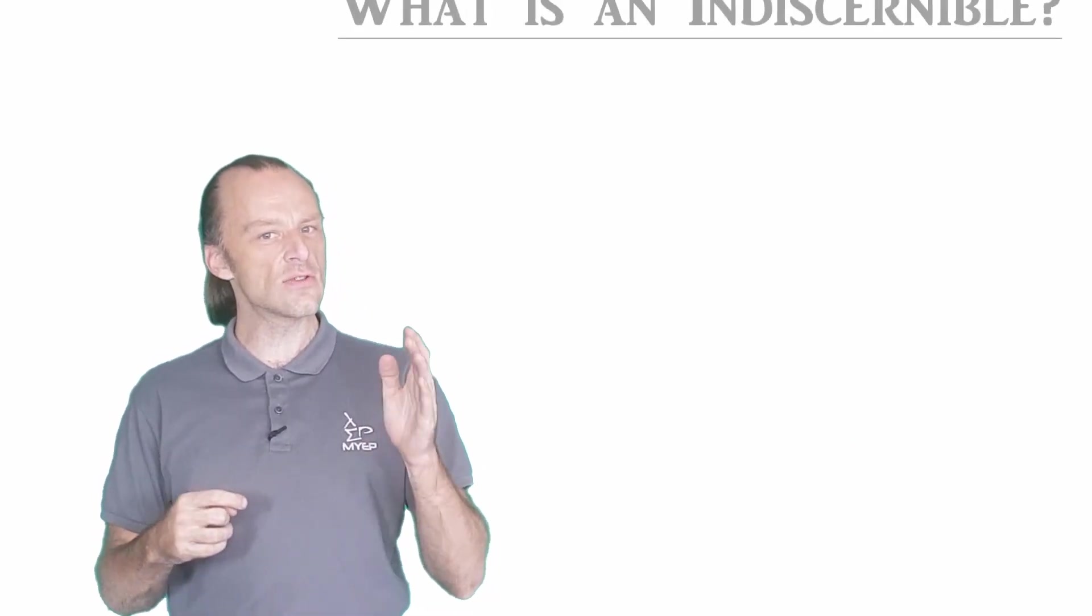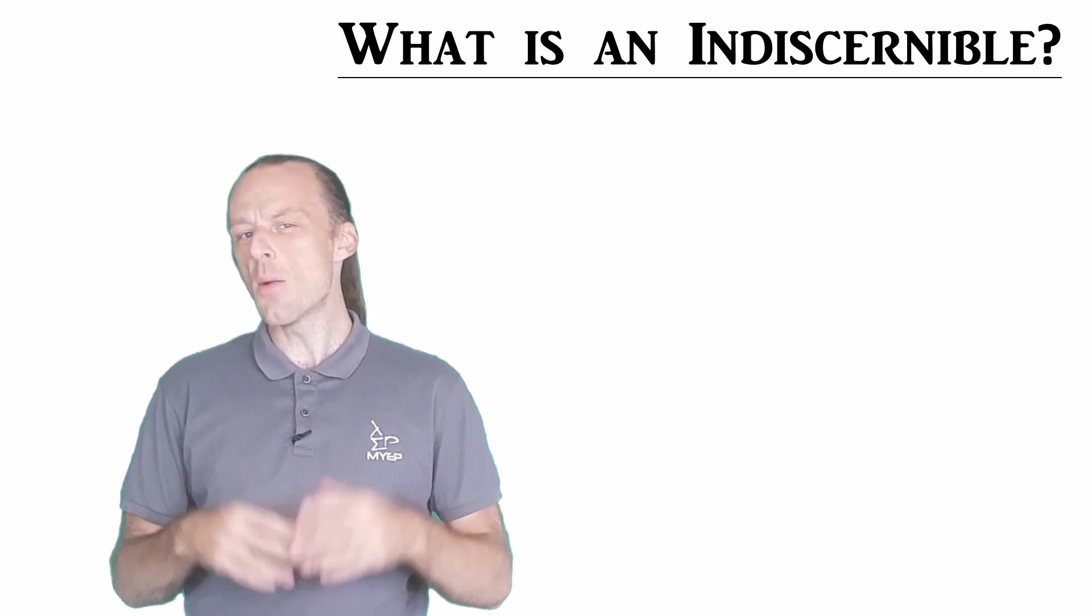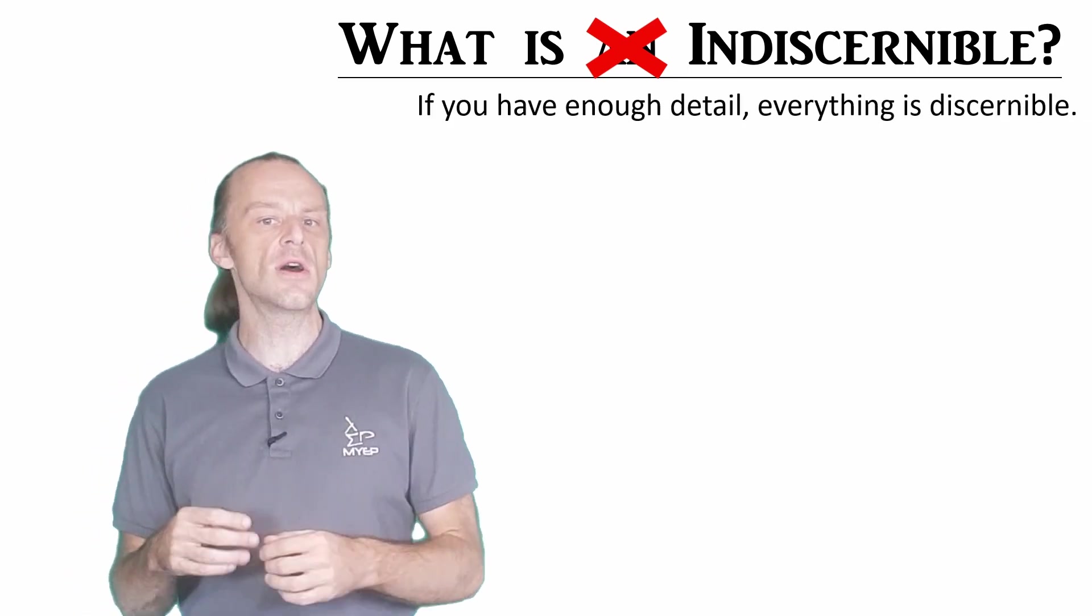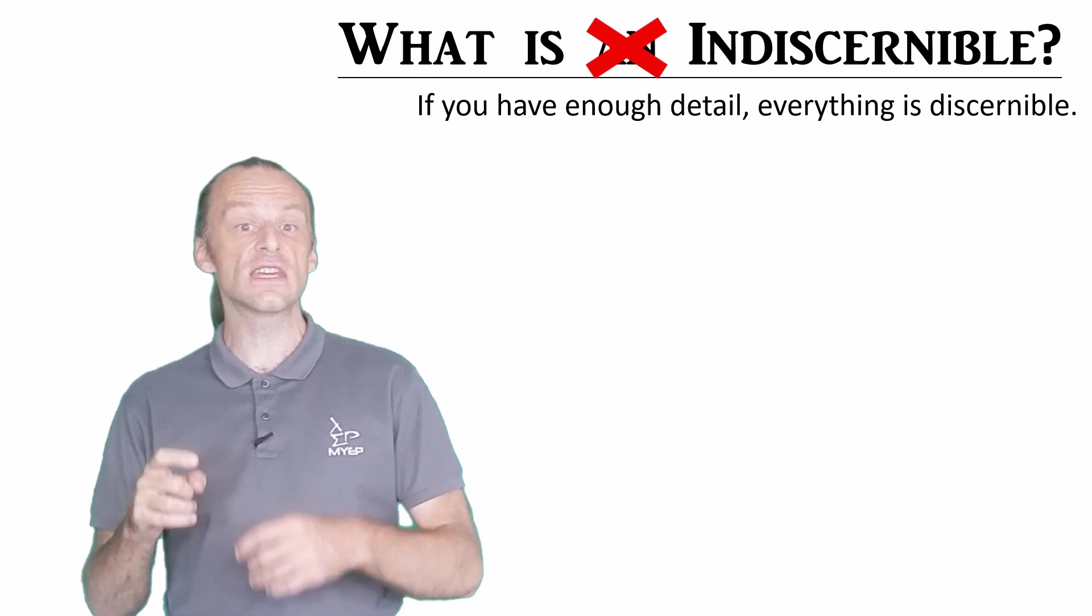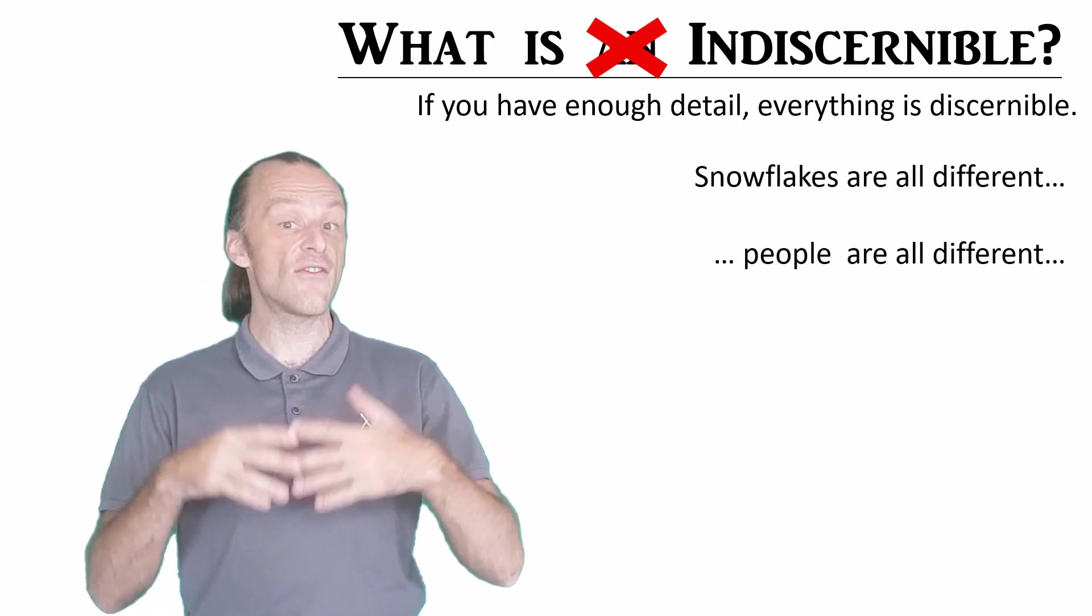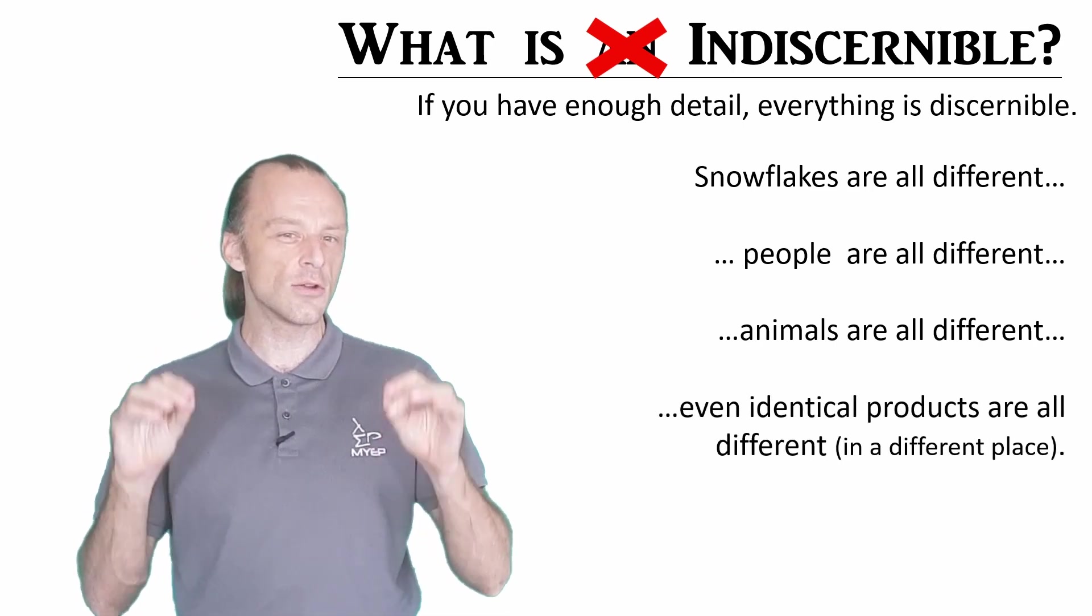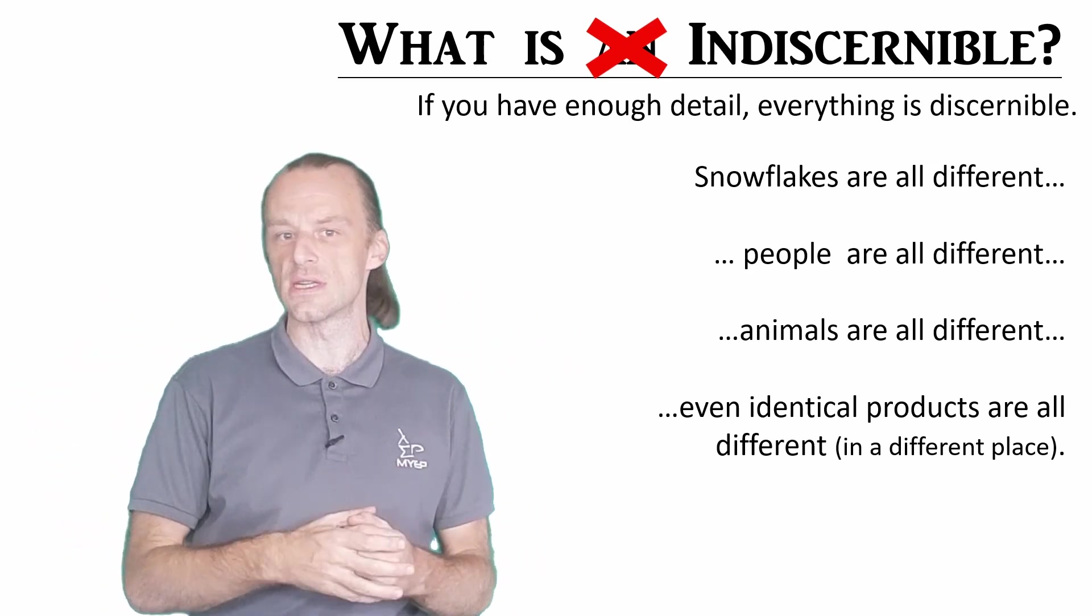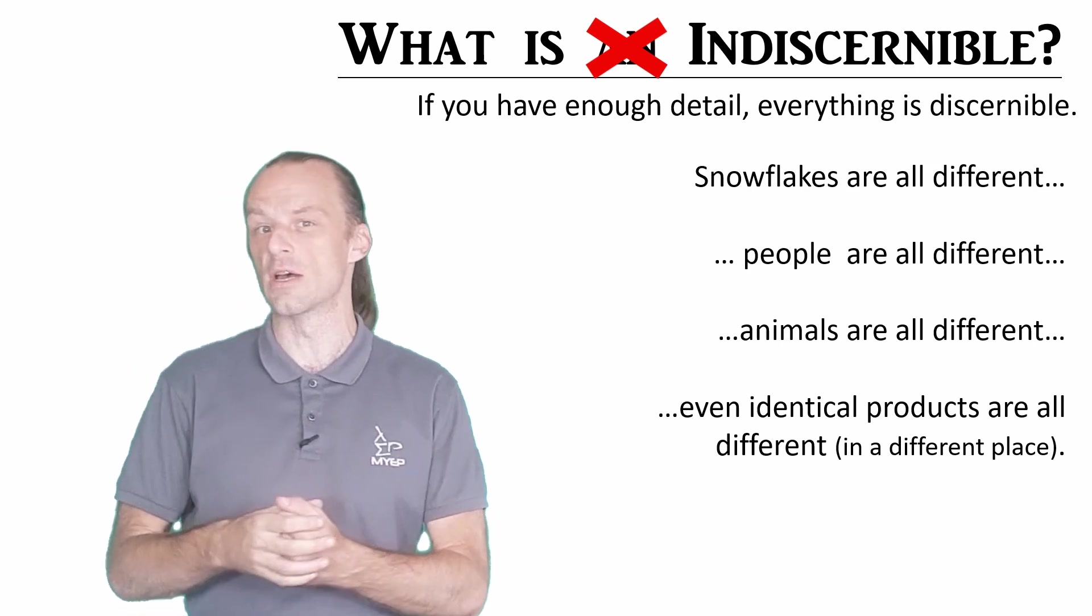So we've defined an indiscernible, but we also need to ask when we look at the world around us, what is indiscernible? And what needs to be indiscernible? Of course, if you have enough detail about the world, every possible thing is discernible. Every snowflake is different, every person is different, every animal is different. Even two industrial products, identical in every way in their production, have to be stored in different locations in space.